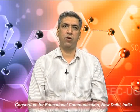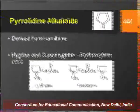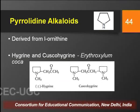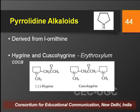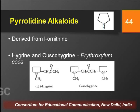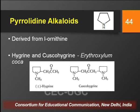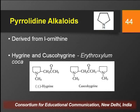Pyrrolidine alkaloids have a pyrrolidine ring in their structure and are mainly derived from the amino acid ornithine. Common examples are hygrine and cuscohygrine, which are obtained from the seeds of coca, Erythroxylum coca. You can clearly see the presence of the pyrrolidine ring in their structures.